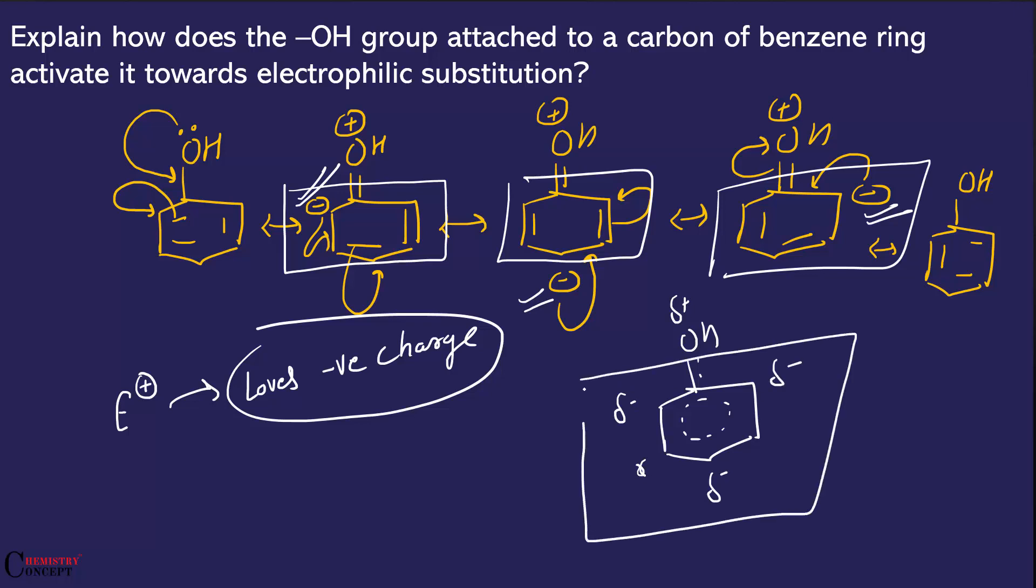Aisa sa kuch hoga: yaha par partial positive charge aur baaki sab par partial negative charge. To you can see, is resonance ki wajah se benzene ke upar jo partial negative charge hai, wo aa gaya hai. Benzene ki electron density increase ho gayi hai. Aur jab benzene ki electron density increase ho gayi hai, to jo bhi electron loving species hai, wo benzene par aake attach hongi. And that is why benzene ki reactivity badh gayi.